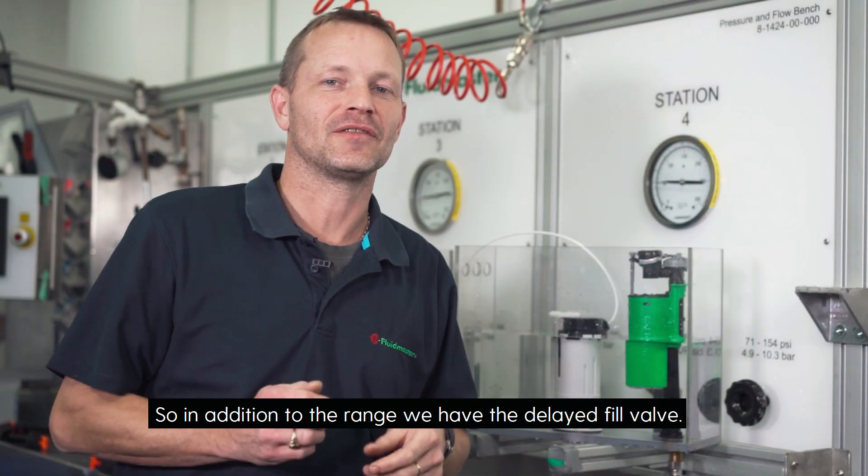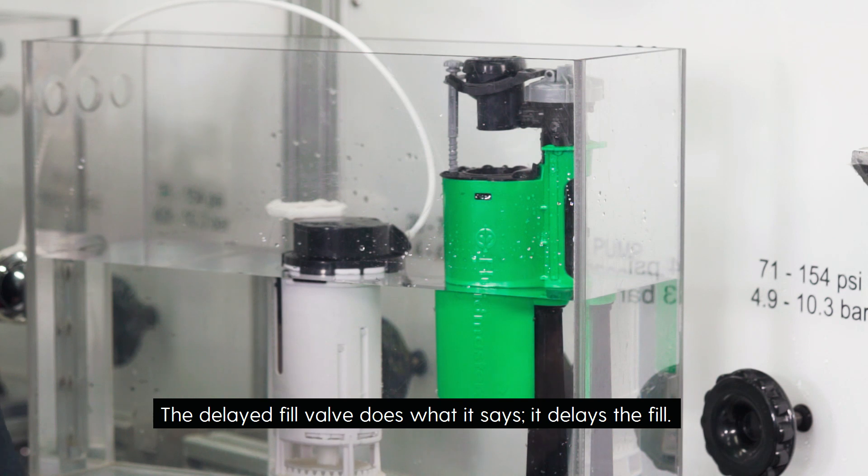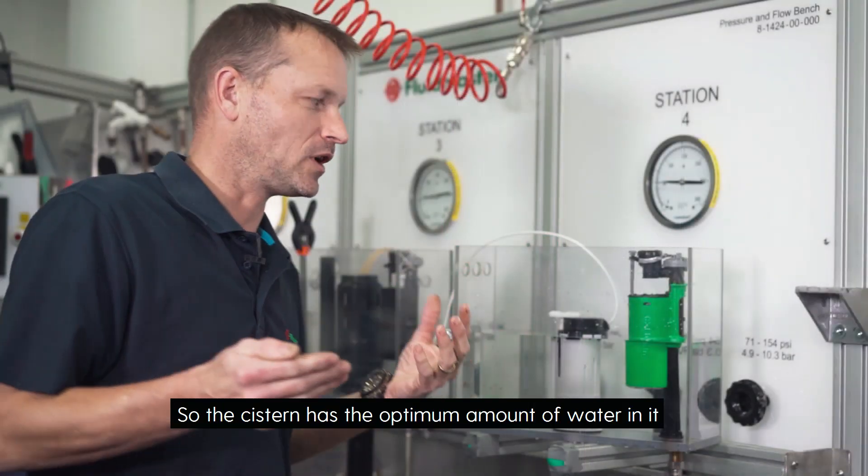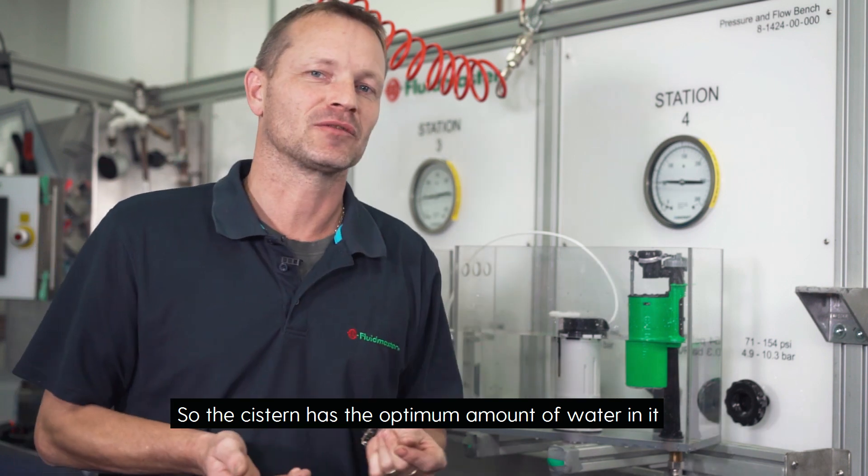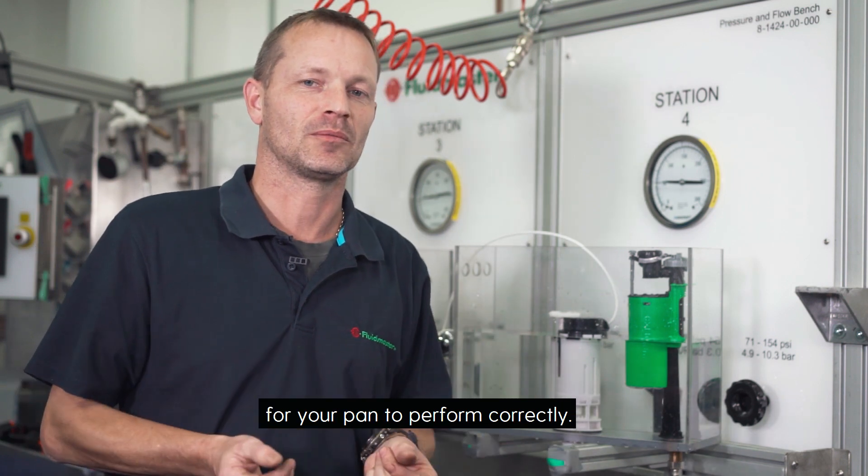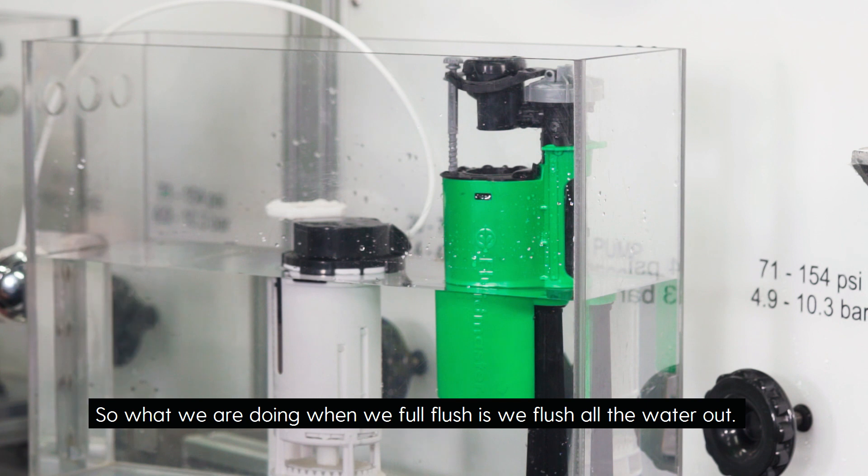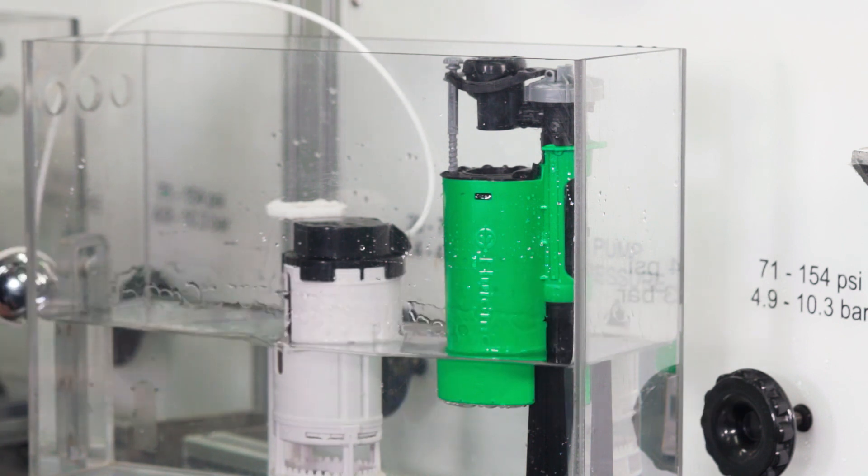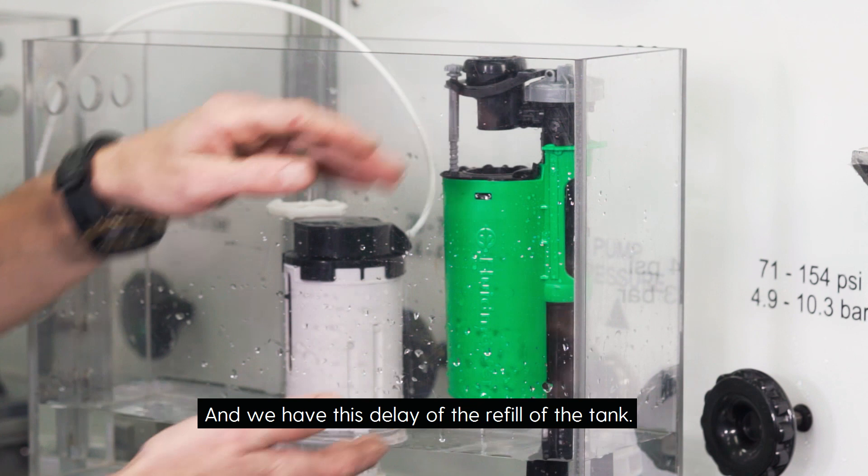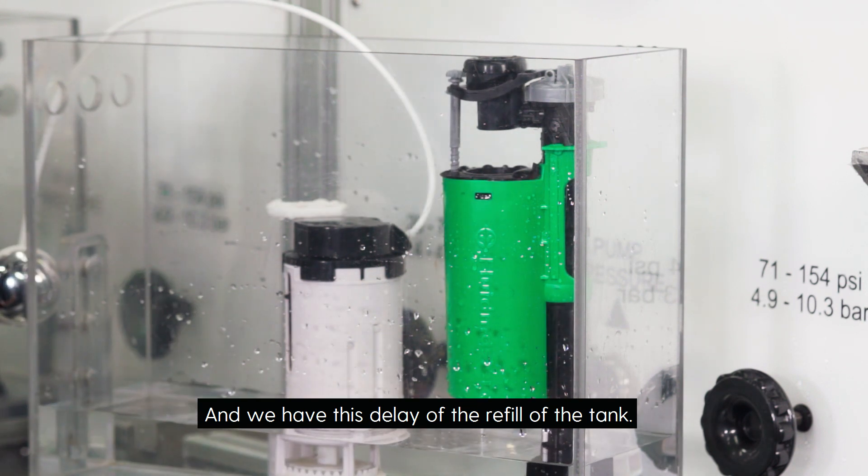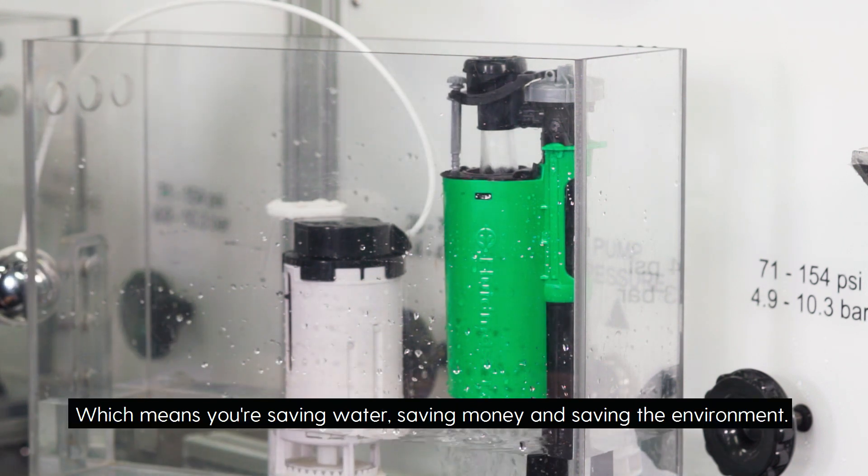In addition to the range, we have the delayed fill valve. The delayed fill valve delays the fill so the system has the optimum amount of water in it for your pan to perform correctly. When we full flush, we flush all the water out and we have this delay of the refill of the tank, which means you're saving water, you're saving money, and you're saving the environment.